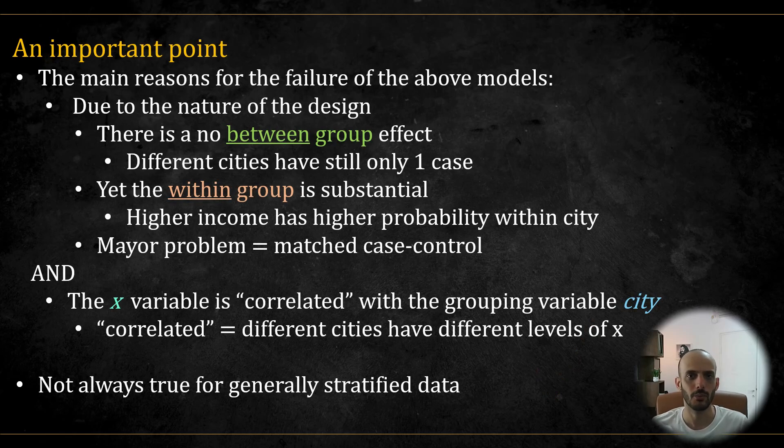So all these models will fail, but a conditional logistic regression will usually succeed. Now, I want to stress an important reason why this happens. So the main reason GLMM and GEE models fail is that by the nature of the problem, there is no between group variation. So there is no between group effect on the Y's because the Y's are the same in each city. But at the same time, there is a substantial within group variation as candidates with higher income have a higher probability of winning within each city. Again, I'm assuming that this is true for the sake of illustration. I'm assuming that the data came from some model where higher income did in fact cause a higher probability.